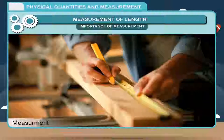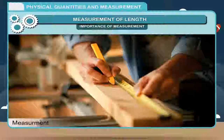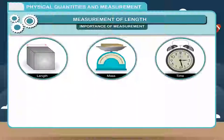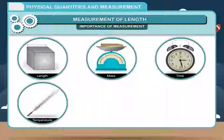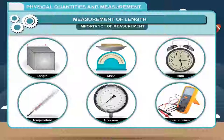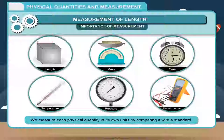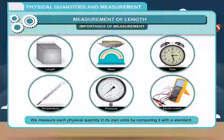In Physics, we usually learn how to measure quantities that are involved in it. Among these quantities, some are length, mass, time, temperature, pressure, and electric current. Anything which is measurable is called a physical quantity. We measure each physical quantity in its own units by comparing it with a standard.